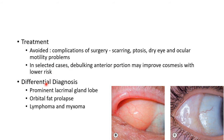The differential diagnosis of dermolipoma includes prominent lacrimal gland lobe, orbital fat prolapse, lymphoma, and myxoma. Orbital fat prolapse closely resembles dermolipoma, as does myxoma.